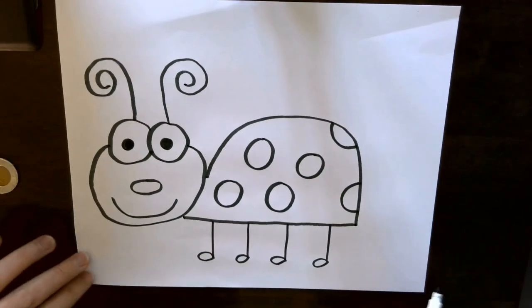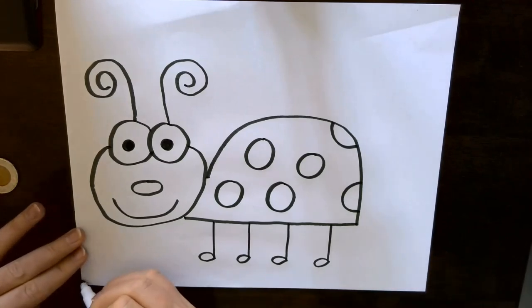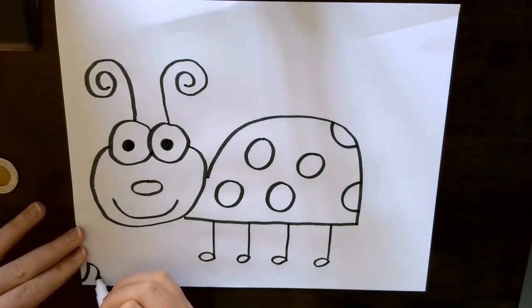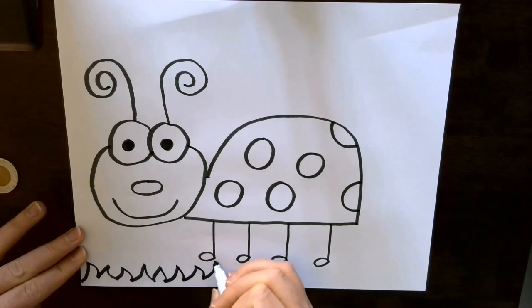Now I'm going to add some grass for the ladybug to stand on. So I'm going to do little spikes like this. They actually kind of look like fire the way I'm drawing it. So like those shark teeth we did on the eggshell in the last video.